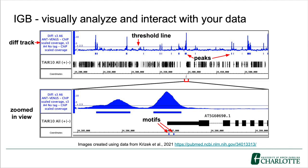To demonstrate what I mean by visually analyzing and interacting, I've included an example in IGB using data from a ChIP-seq experiment investigating binding sites for the ANT transcription factor in Arabidopsis from Dr. Beth Krizak's lab. The first thing I did was to load the tagged and untagged ChIP-seq graph tracks. I then used IGB to subtract out the untagged graph data from the tagged data, giving me the difference track that you can see in blue, where the only values remaining should be those of the tagged peaks.